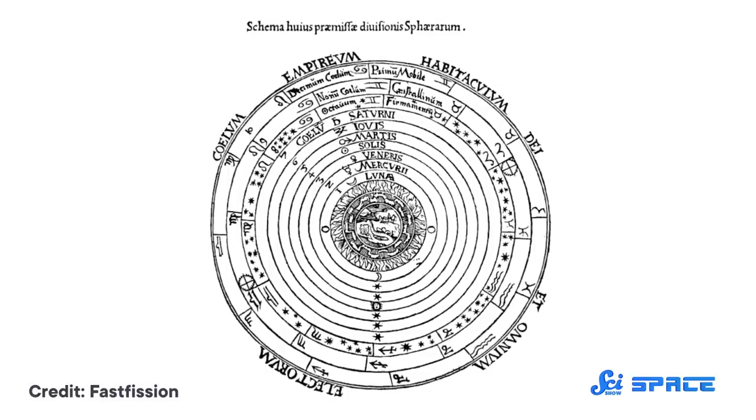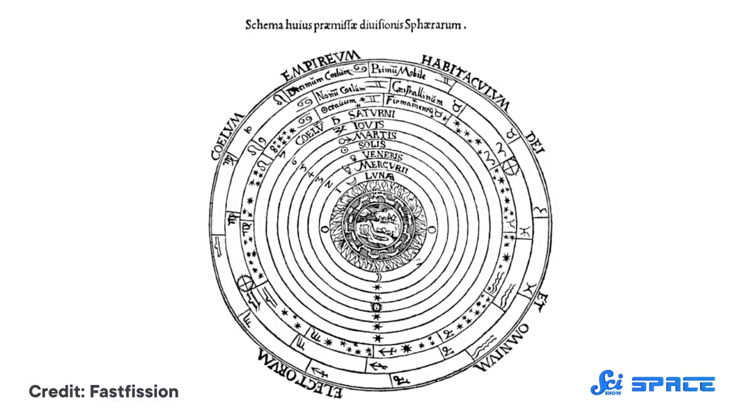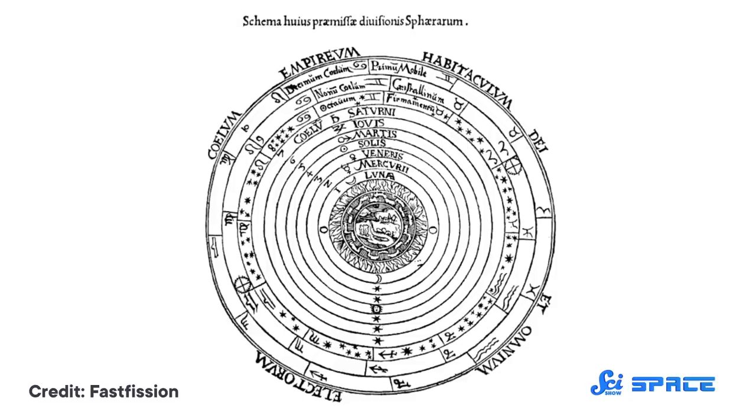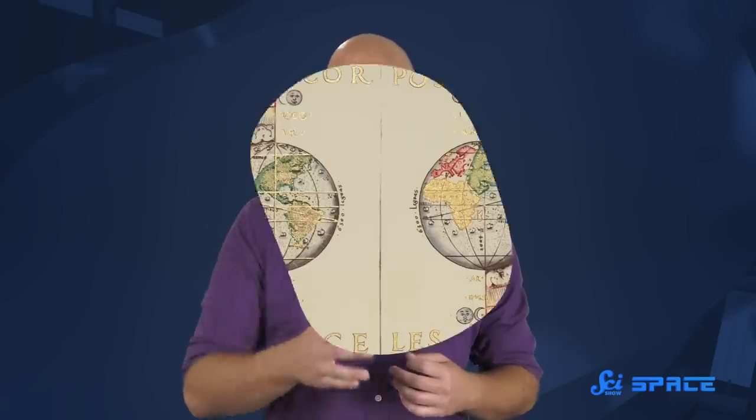When the ancient Greeks looked up at night, they saw that almost all the points of light moved together, like a large photograph sliding across the sky. There were just five planetas, five wandering points that followed their own changing paths from one month to the next.